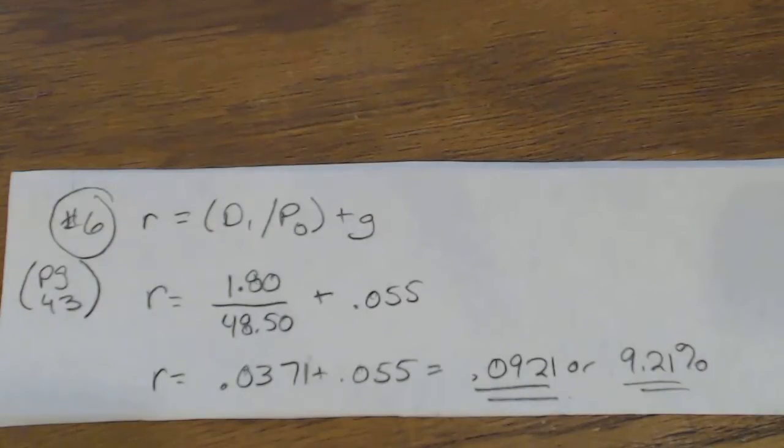Okay, so R equals, in this case, you know that D1 was $1.80. P0 was $48.50 a share, the current selling price. And they told you that there was a 5.5% growth rate. So just plug in all the numbers, and you get R equals 0.0921, or 9.21%.